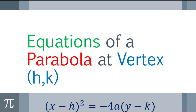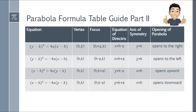Now let's go to the equations of a parabola with vertex at (h, k). For this equation, the vertex is no longer at the origin, so we use a different formula. One example is: (x − h)² = −4a(y − k). Don't worry — we have a formula table guide with four equations, and I will give you techniques to make solving easier.